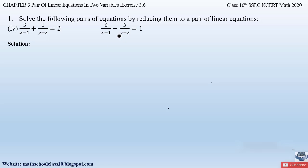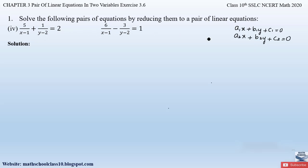Same way as we solved in our previous problems from question number 1, we are going to solve these problems also. So first of all, let us write down the general form of a pair of linear equations: a1x + b1y + c1 = 0 and a2x + b2y + c2 = 0. Here the variables should always be in the numerator, whereas in the given equation the variables x and y are given in the denominator. The coefficients can be in the denominator but the variables have to be in the numerator always.